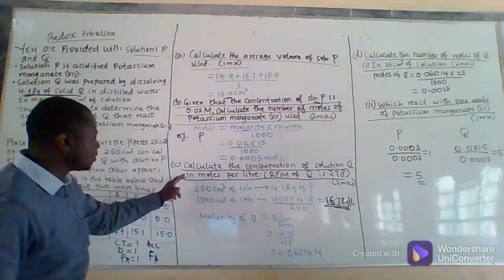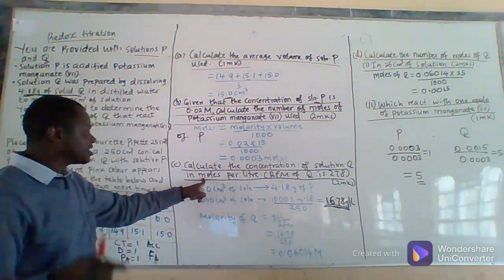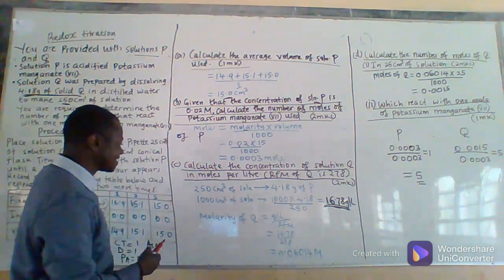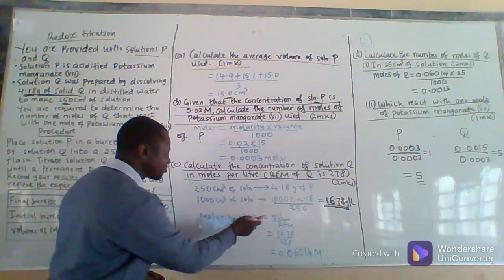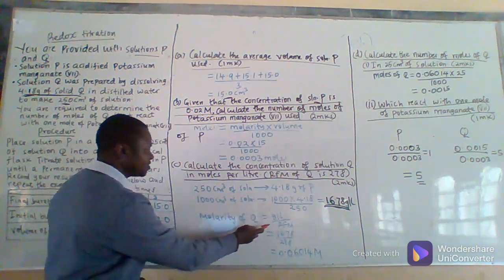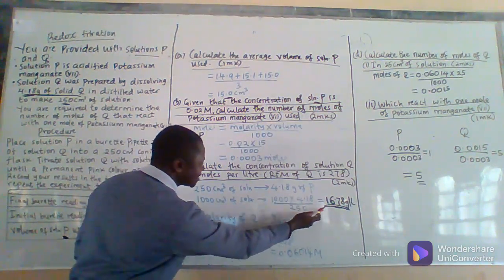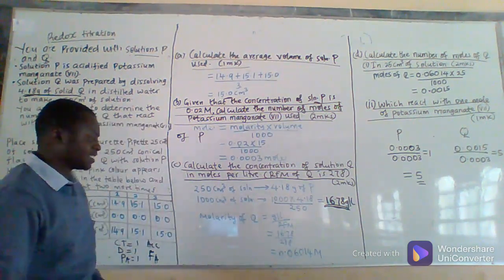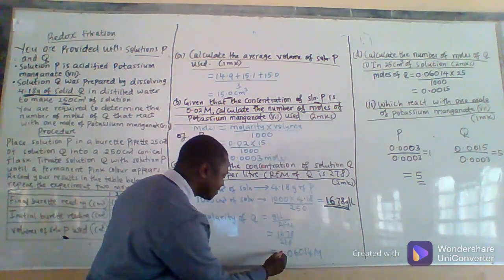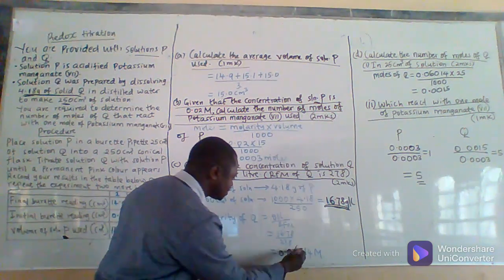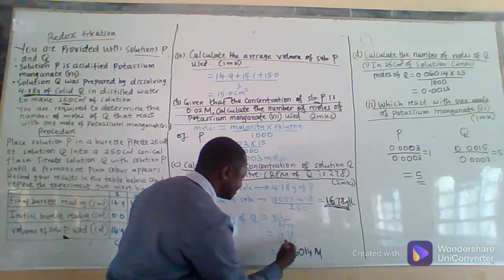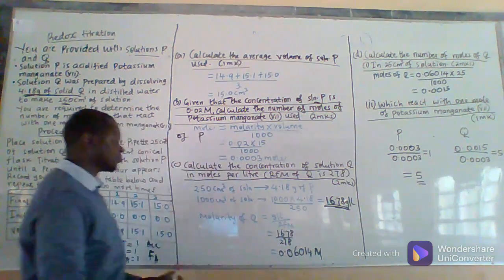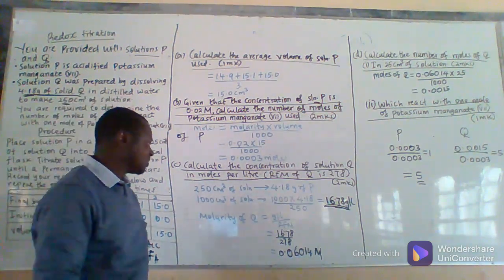They have asked for the molarity of Q, or concentration in moles per litre — remember, concentration in moles per litre is the same thing as molarity. To calculate the molarity of Q: molarity of Q = concentration in grams per litre ÷ RFM = 16.72 ÷ 278, which gives 0.06014 molar. That is the concentration of solution Q in moles per litre, or the molarity of Q.